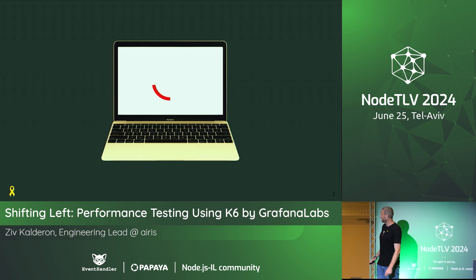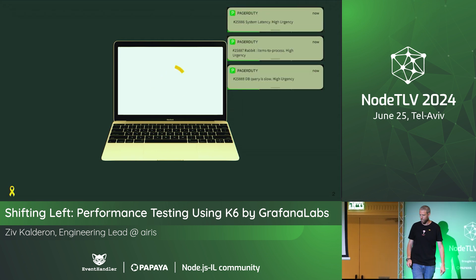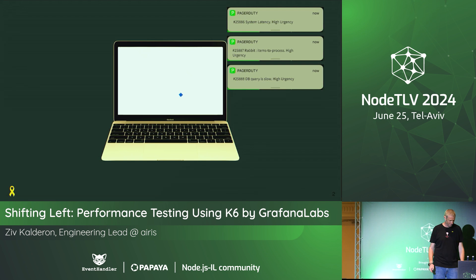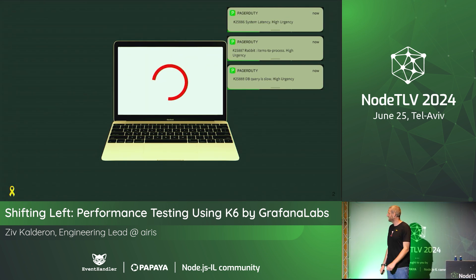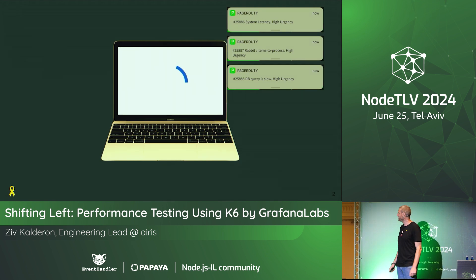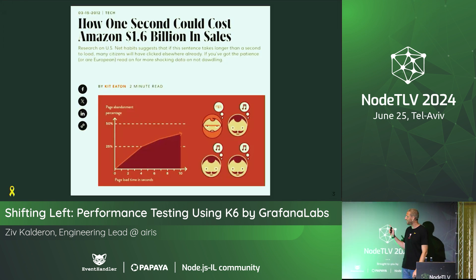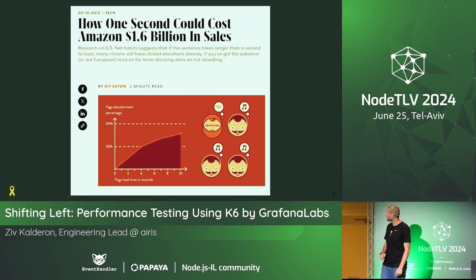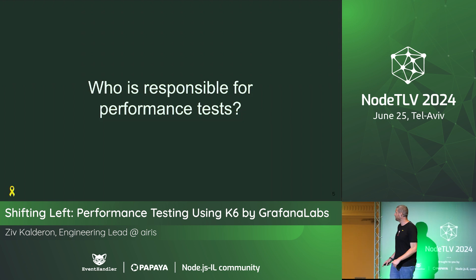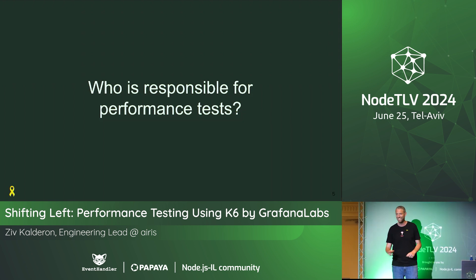Let's wait one more second — I'm getting a PagerDuty alert. I see RabbitMQ latency. Who doesn't like production issues, especially on events? Amazon measured that every second of downtime costs them around 1.6 billion dollars.